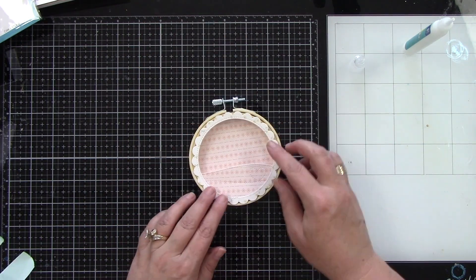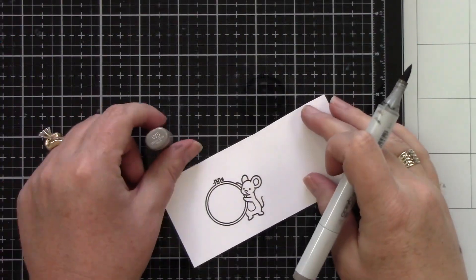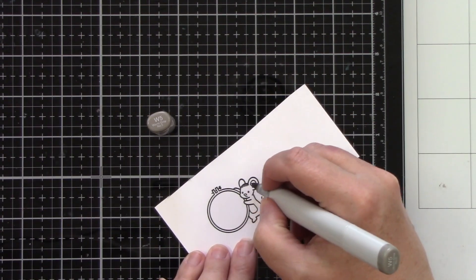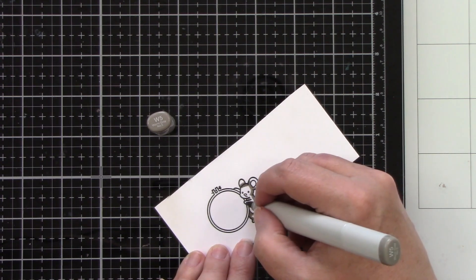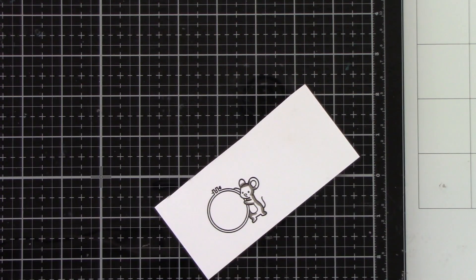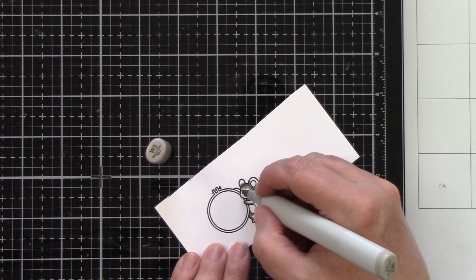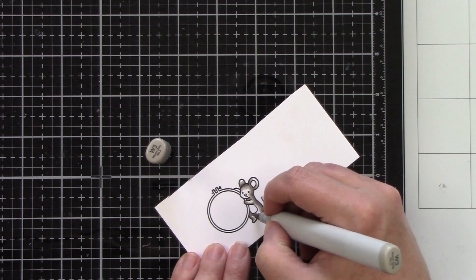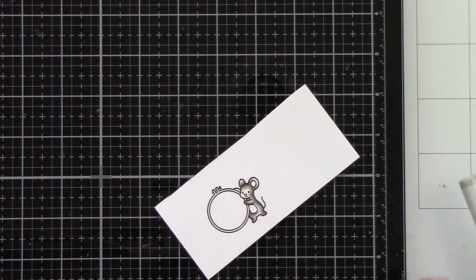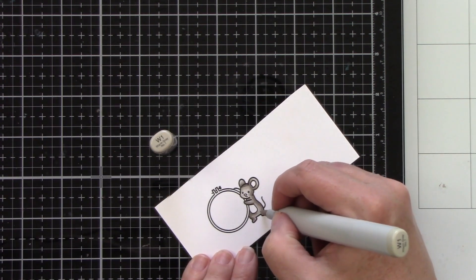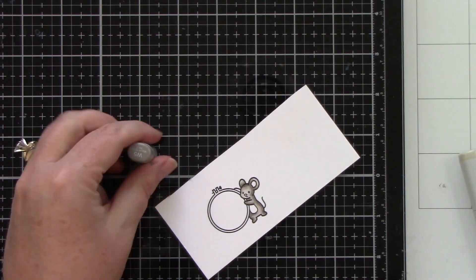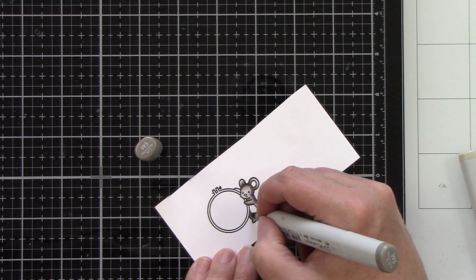Now while everything is drying we can color this super cute mouse from the Sew Very Mice stamp set. I'm using Copic markers on Lawn Fawn's white cardstock. I used jet black ink to stamp it. It is Copic friendly and I think what's so fun about this for me is I just recently started cross stitching again so to have this little set I just about died when I saw it. It is just so darling.